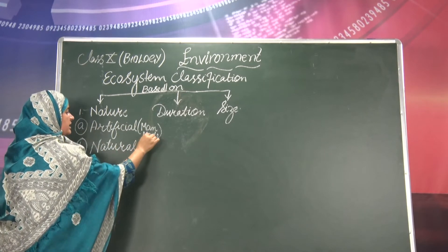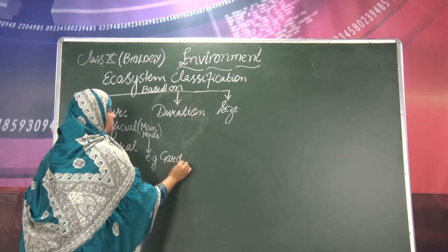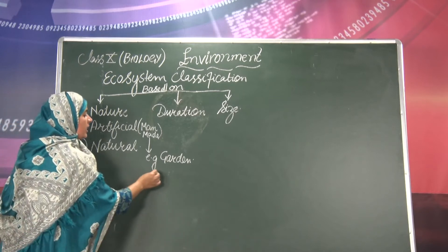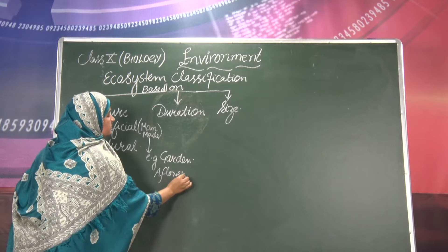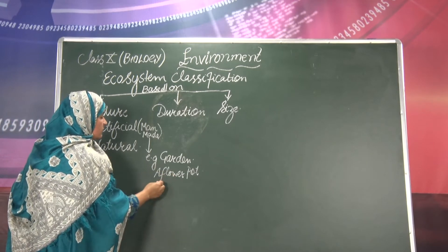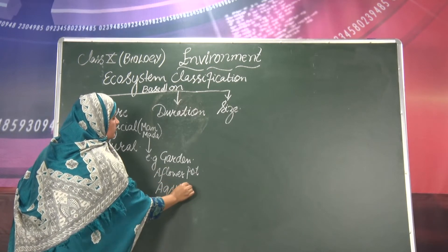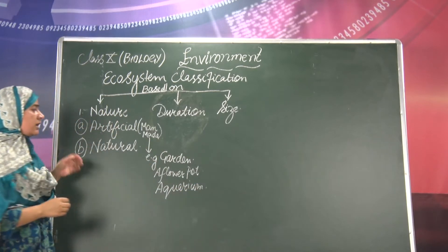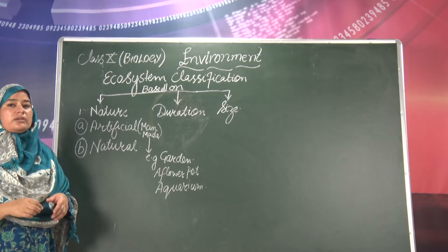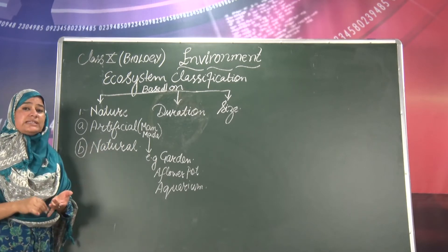Under the artificial kind of ecosystem, the best examples we can give are a garden, a flower pot, or an aquarium. These are examples of artificial ecosystems that are present around us — ecosystems created by man where interaction of living and non-living things can occur.